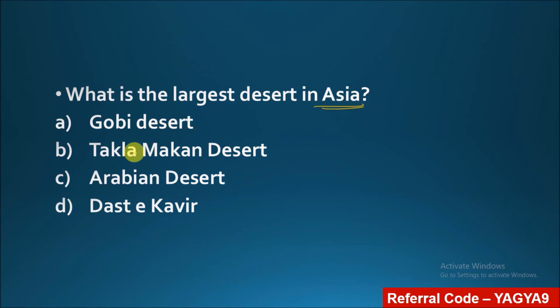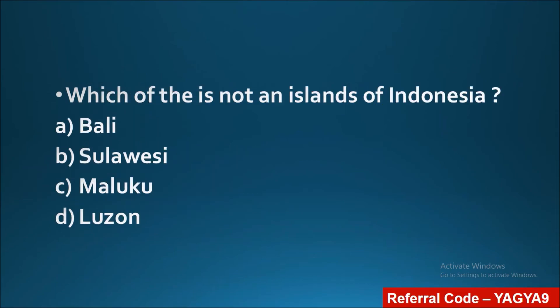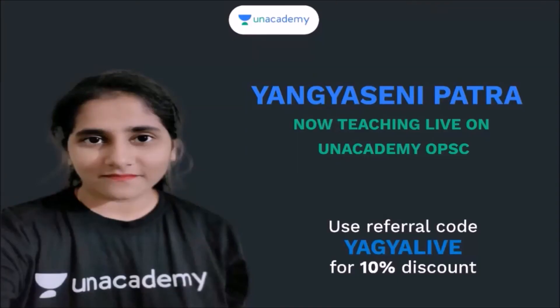What is the largest desert in Asia? Options: Gobi Desert, Taklamakan Desert, Arabian Desert, and Dasht-e Kavir. The correct answer is the Arabian Desert.